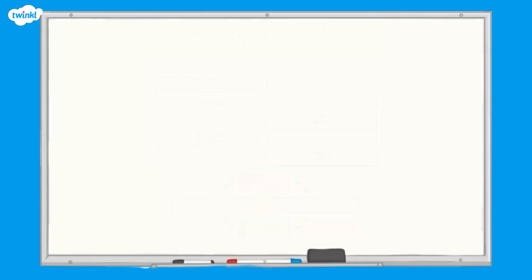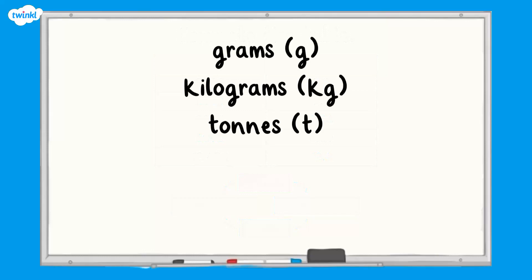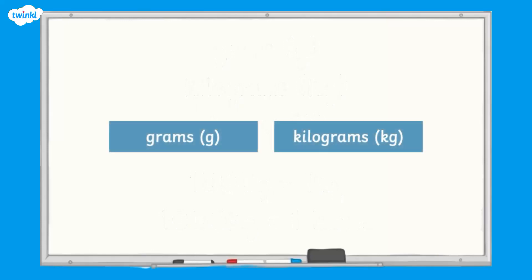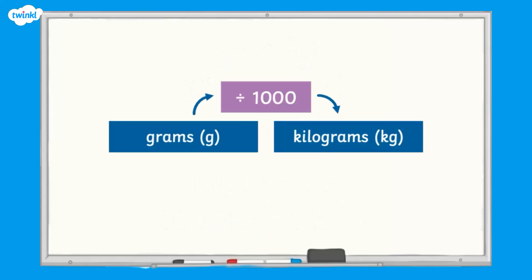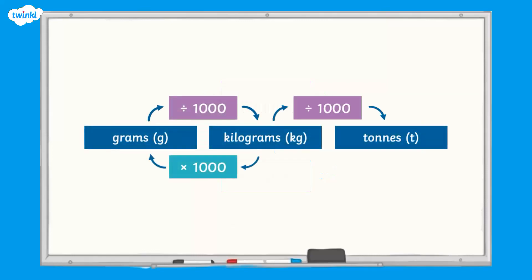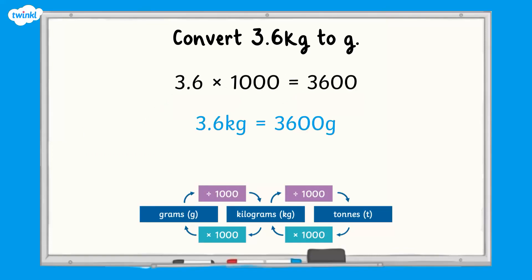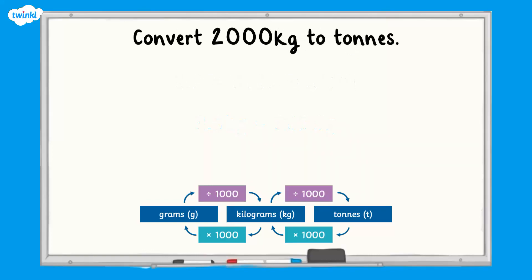Finally, let's look at some metric units of mass: grams, kilograms, and tonnes. There are 1000 grams in one kilogram and 1000 kilograms in one tonne. To convert grams to kilograms, divide by 1000. To convert kilograms to grams, multiply by 1000. To convert kilograms to tonnes, divide by 1000. To convert tonnes to kilograms, multiply by 1000. For example, 3.6 kilograms multiplied by 1000 gives 3600 grams, and 2000 kilograms divided by 1000 gives 2 tonnes.